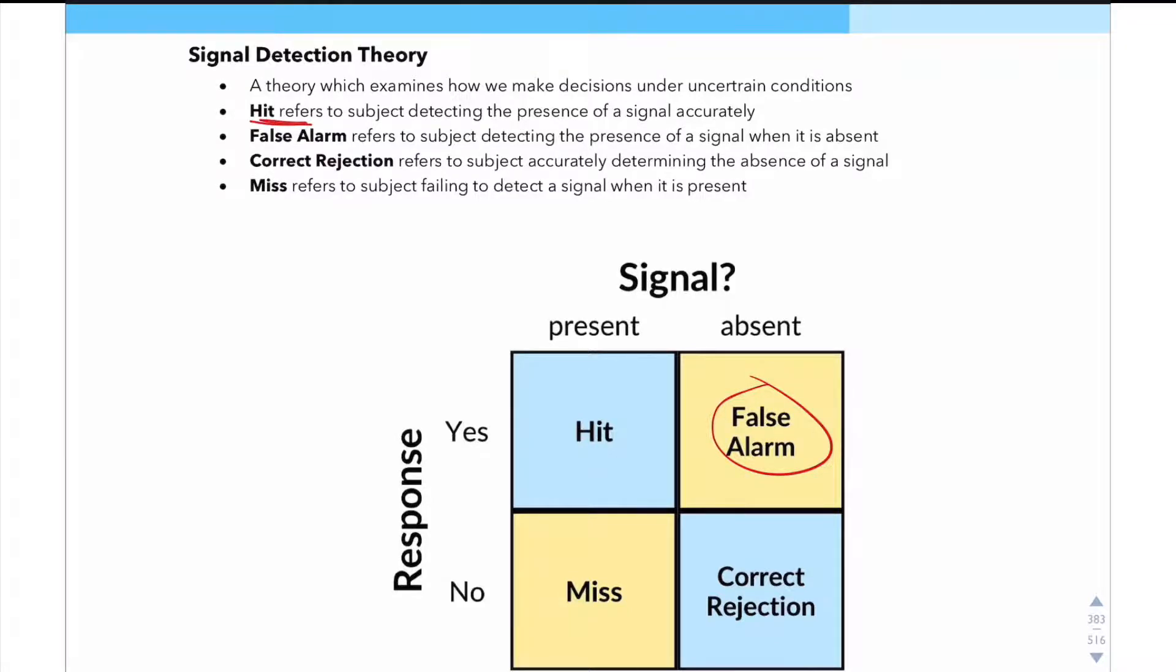Next, we have what's called a correct rejection. So a correct rejection refers to a subject who accurately determines the absence of a signal. And if this is a little confusing right now, don't worry, we're going to go over an example in just a sec. And lastly is a miss. And a miss refers to a subject failing to detect a signal when it is present.